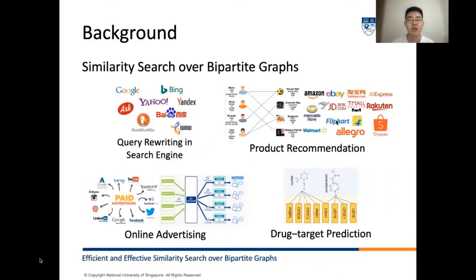Similarity search in a bipartite graph is to find similar nodes of the same type. It finds many applications in real-world scenarios, including query-related writing in search engines, product recommendations in online shopping websites, drug-target prediction, and online advertising.